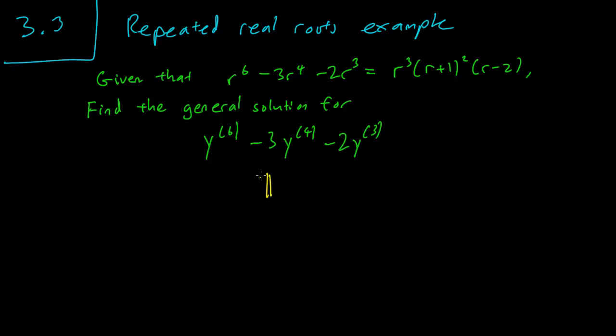So we do what we normally do. We plug in y equals e^(Rx) and that gets us that the solutions of this are related to R^6-3R^4-2R^3 equals 0. There should be an equal 0 in this problem.